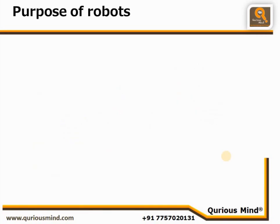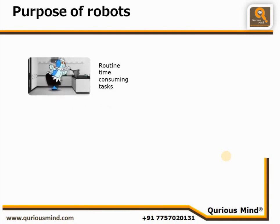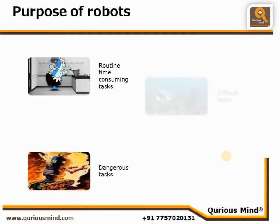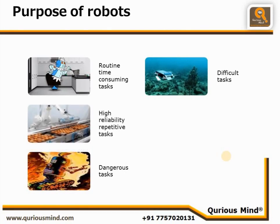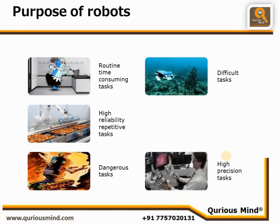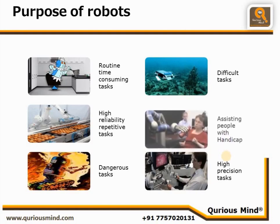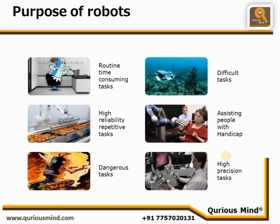As we have seen in the definition slide, robots are created for multiple purposes. A robot is created to get rid of boring, time-consuming tasks such as cleaning, washing, etc. Robots are also employed when there is danger involved, such as working in high temperatures, high pressures, or high altitudes. They are also created for highly repetitive tasks where there is a chance of slowing down or making mistakes over time. Robots are extensively used for activities that require high precision. Lastly, robots are nowadays used to assist people with handicaps for basic needs such as eating and moving between places. The usage of robots does not stop here — robots can be employed in almost any and every situation.